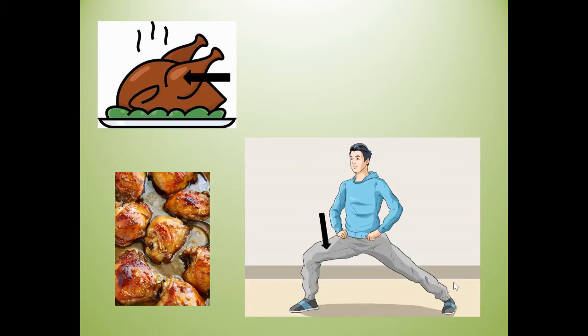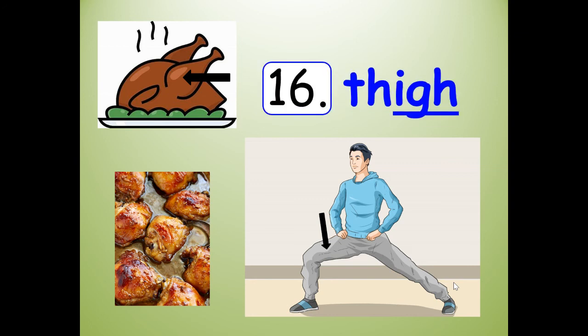Last one, number sixteen. It's all pointing to something on the chicken or on the man's leg — what part is that called? That is called a thigh. T-H-I-G-H. I-G-H says I. Put a TH in front of it — thigh. A chicken thigh or a human's thigh. T-H-I-G-H. Thigh.